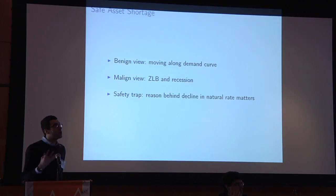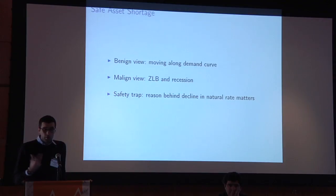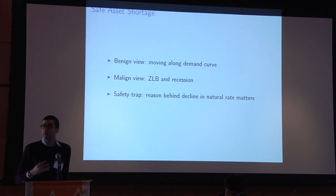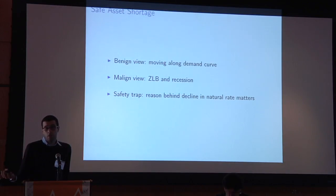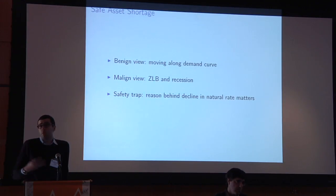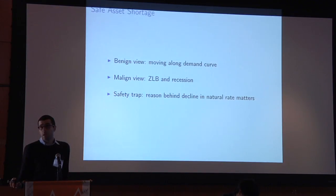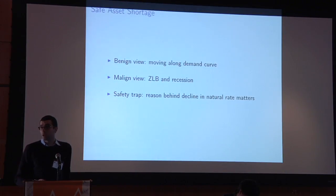Can we connect all these facts? The first three really point to a shortage of safe assets. But there's a benign view: safe assets are in shortage, so their price goes up, meaning the interest rate for safe assets goes down — and that's all there is to it. You're walking up and down a demand curve.